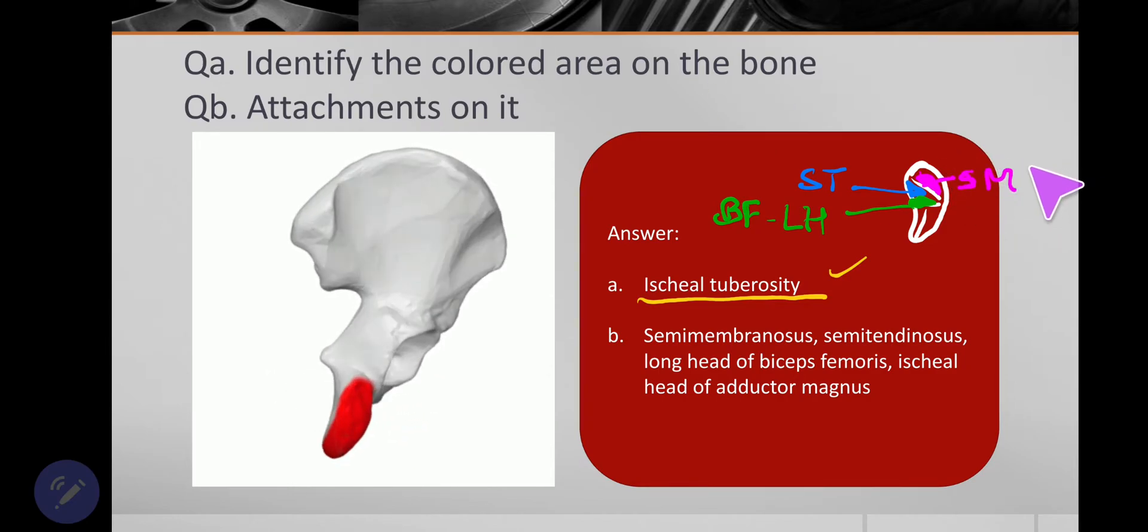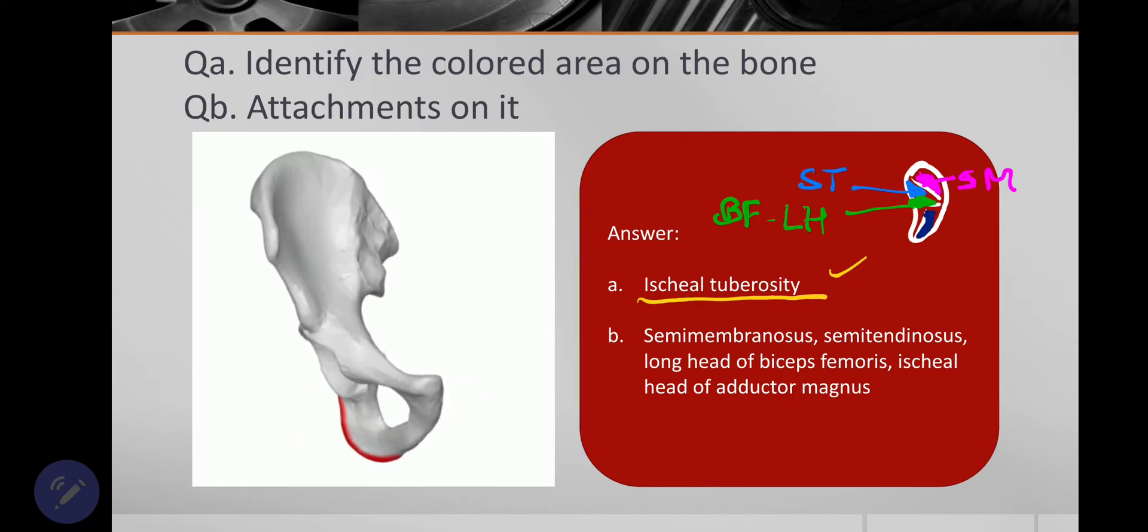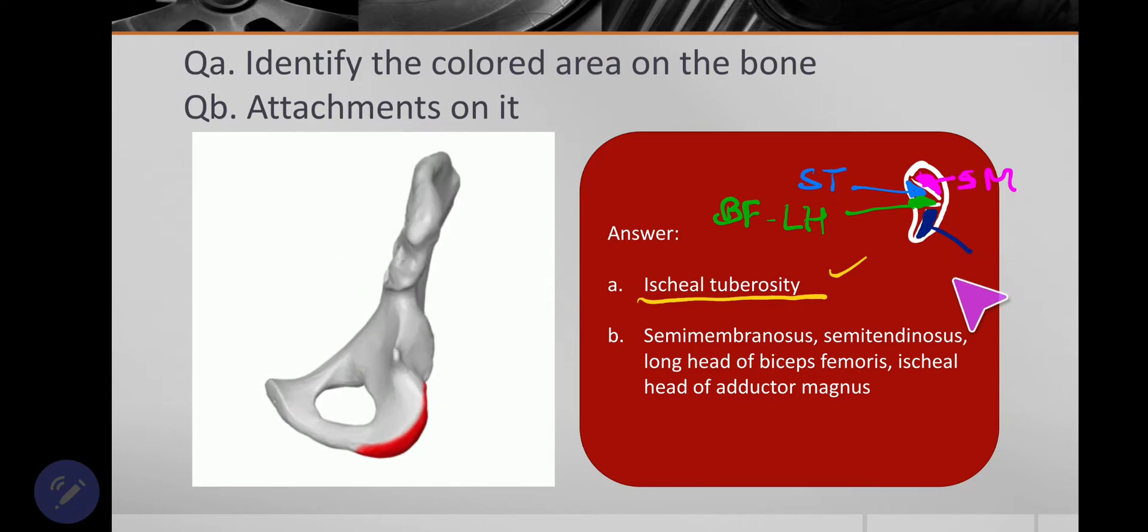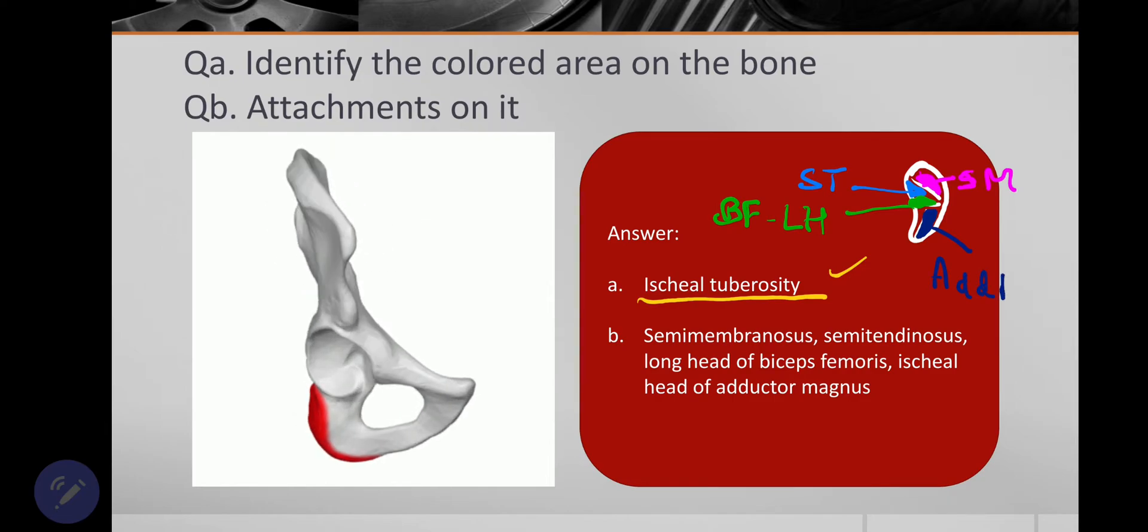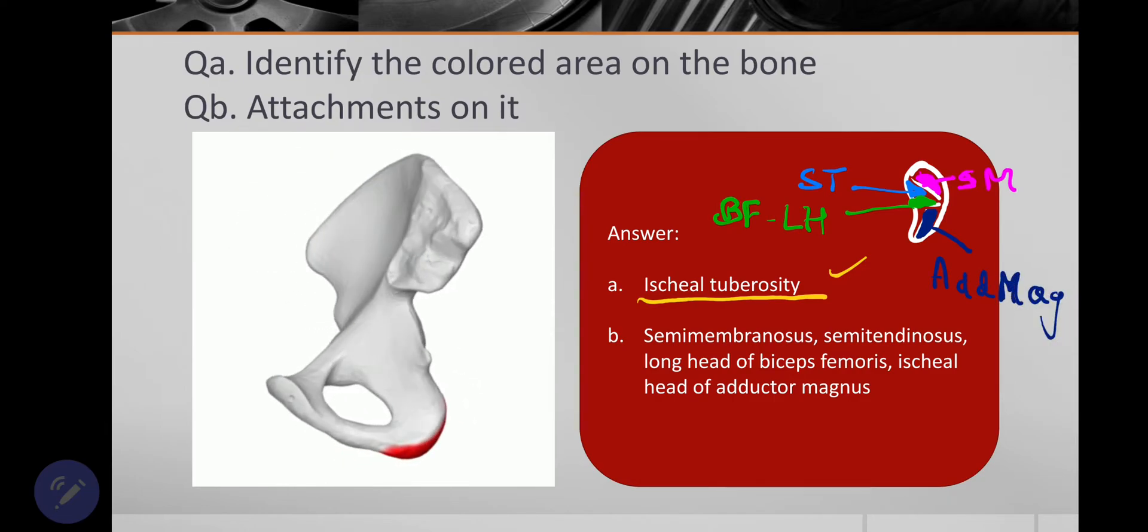And on this surface, inferior outer surface, there is origin of this muscle. It's a hybrid muscle. So this is adductor magnus. Adductor magnus.